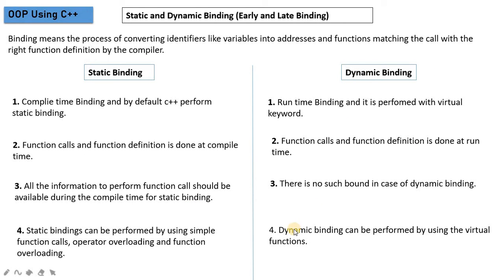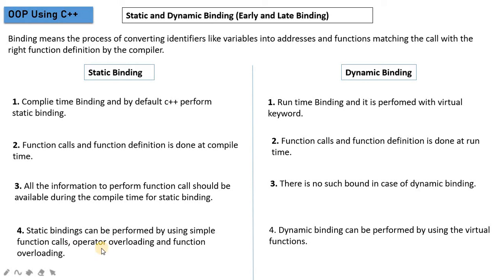This is not the case in dynamic binding. If you have defined a function as 'virtual', then the actual definition to be called is decided at run time. Static binding can be performed using simple function calls, operator overloading, and function overloading. Dynamic binding is performed using virtual functions — the special keyword used is 'virtual'.